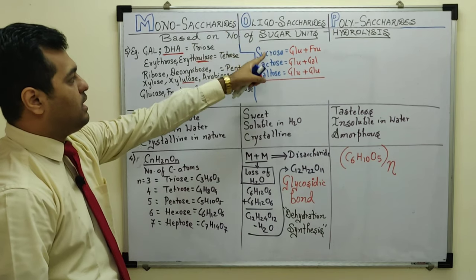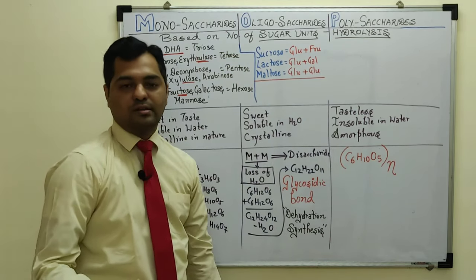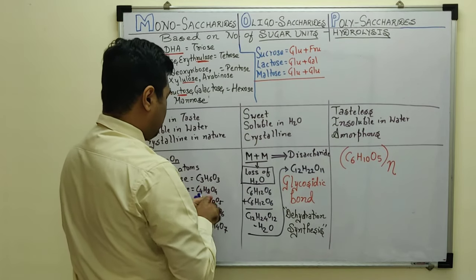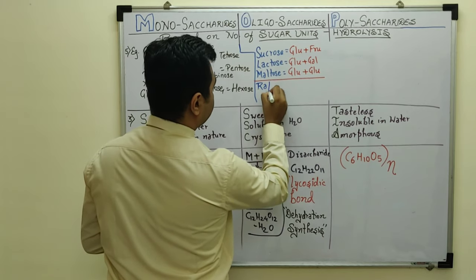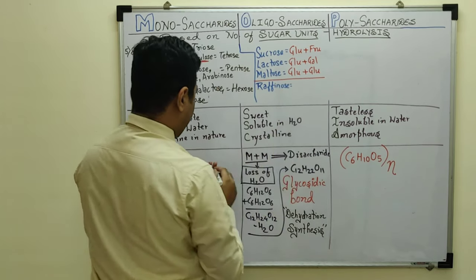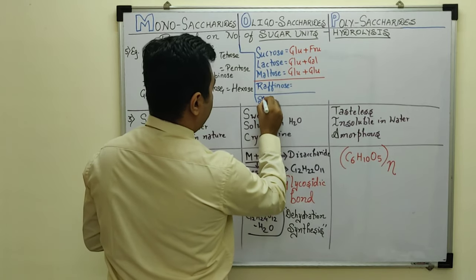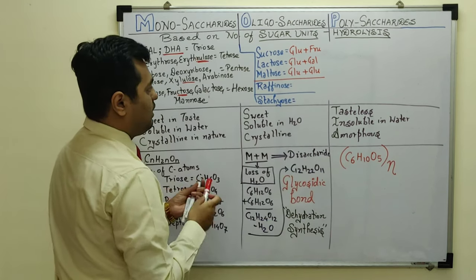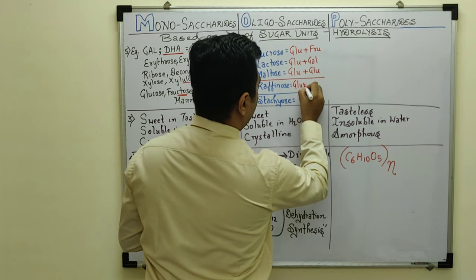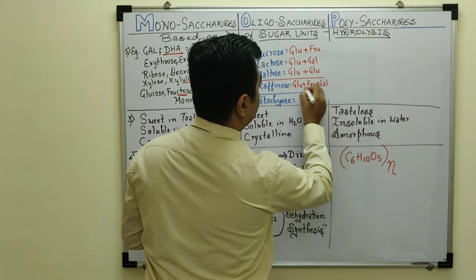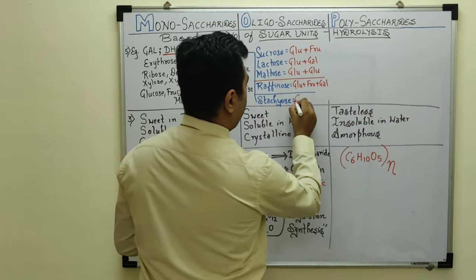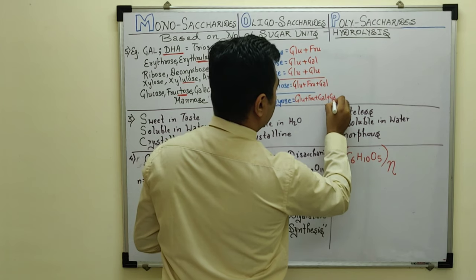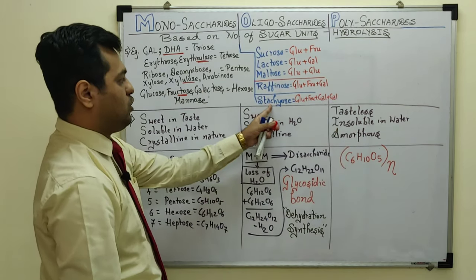Some trisaccharide examples: raffinose, composed of three monosaccharides — glucose, fructose, and galactose. A tetrasaccharide example is stachyose, composed of two galactose molecules plus glucose and fructose, making four monosaccharide units total.